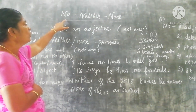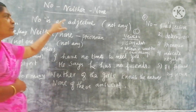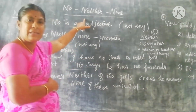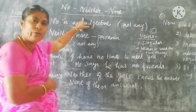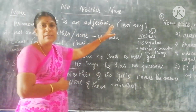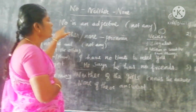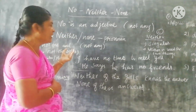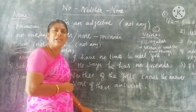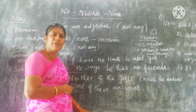In short: no is used for not any, neither is used for only two, and none means more than two. No is an adjective. Let us see a few more examples in the next class. Thank you.